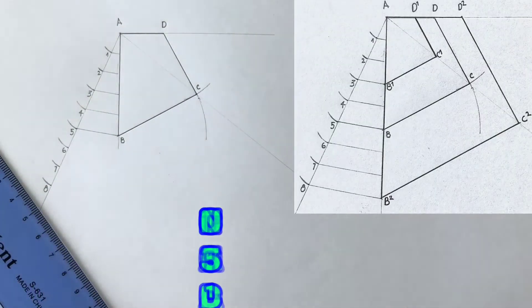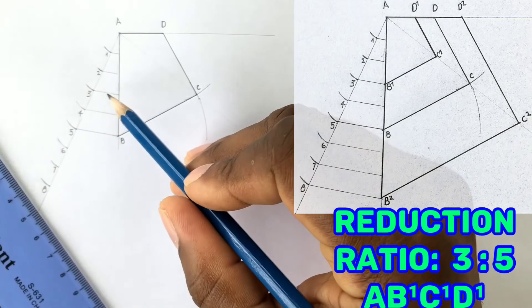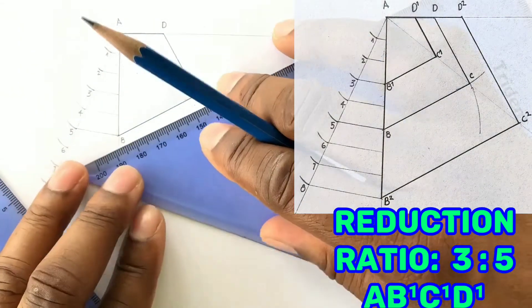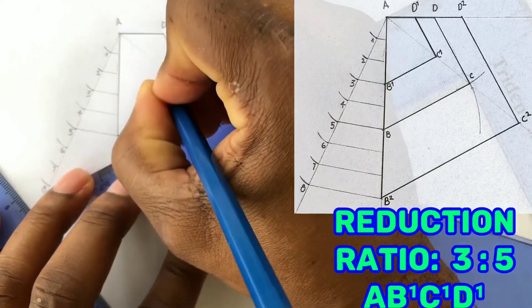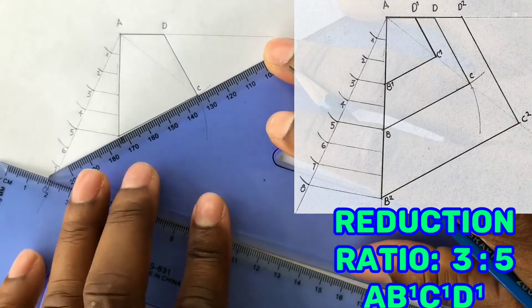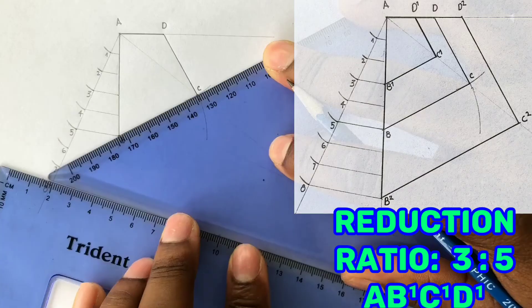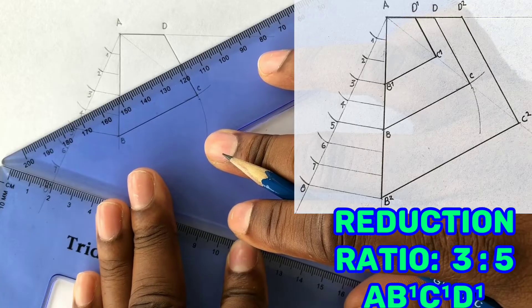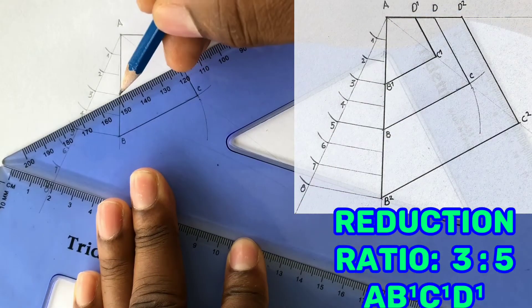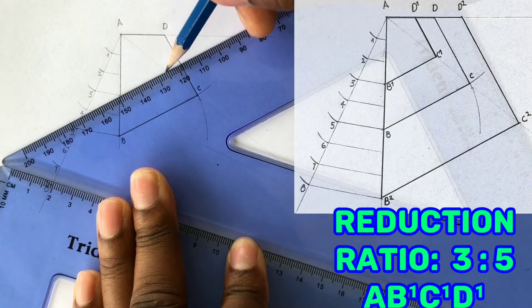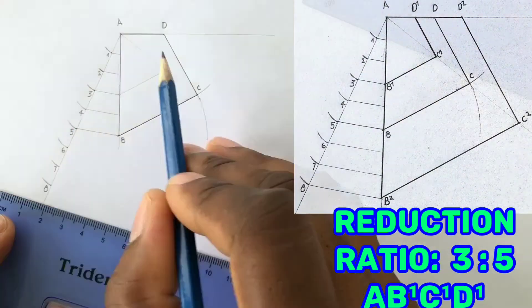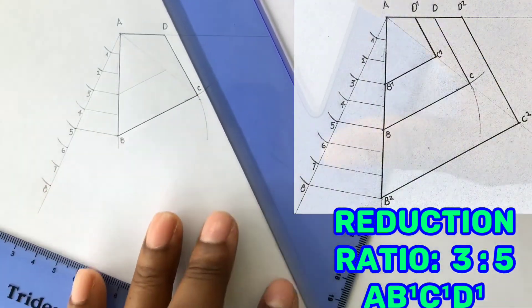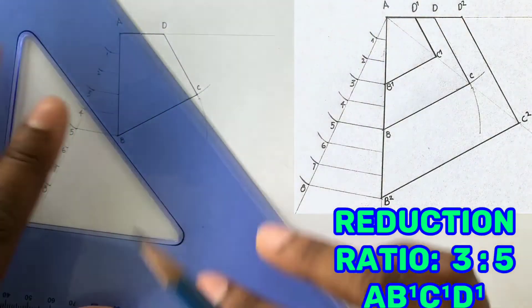Now based on the fact that you were given a reduction ratio of 3 to 5, you will draw a line which is parallel to BC from the third division on the AB line to touch the construction line that runs from A through C. Now draw a parallel line to CD from the previous intersection you drew to line AD.